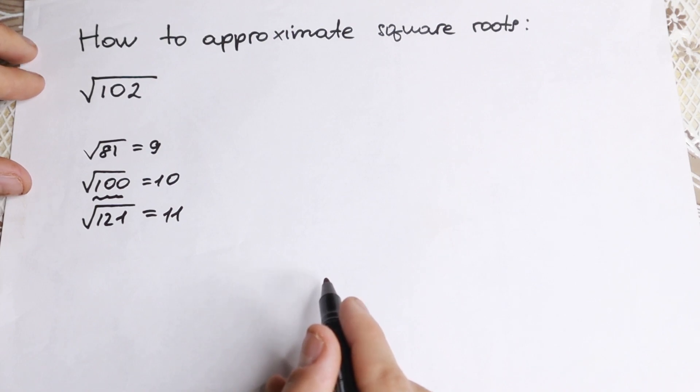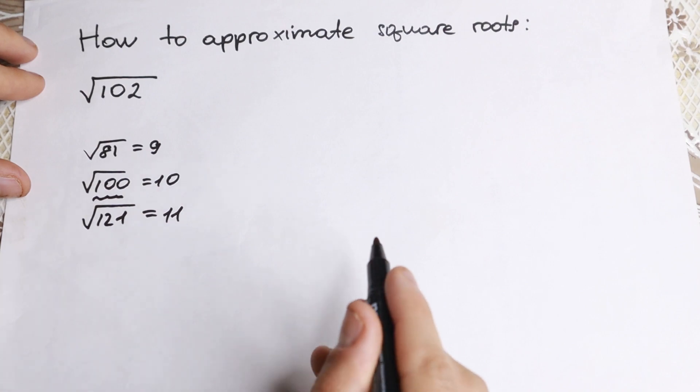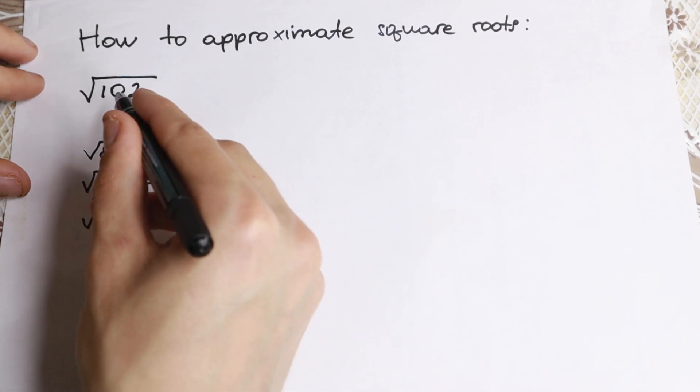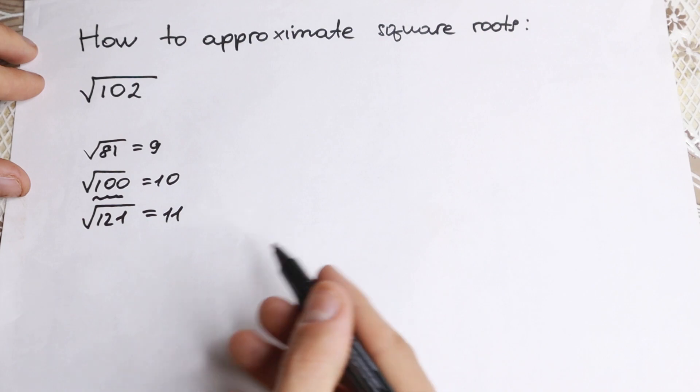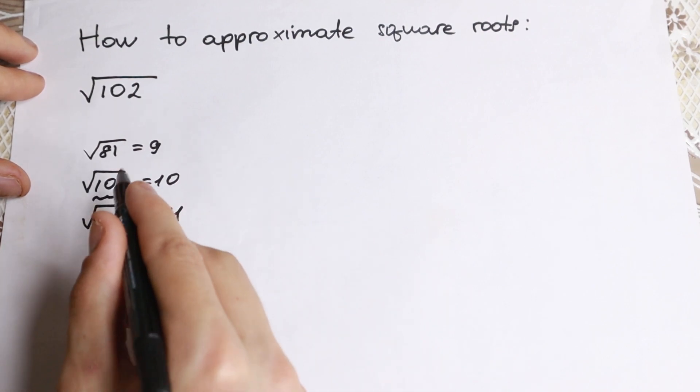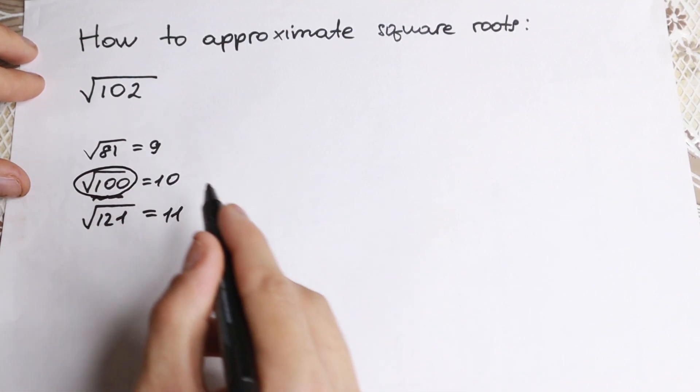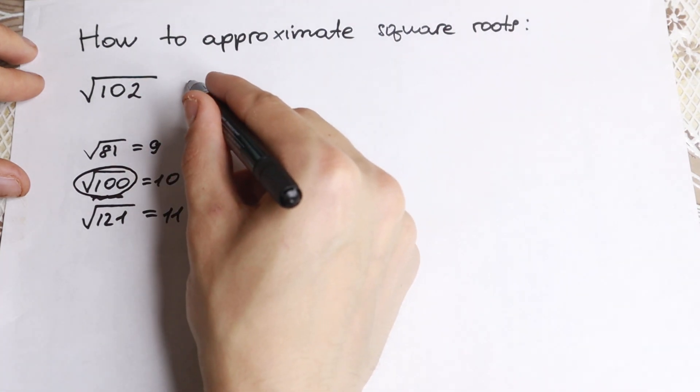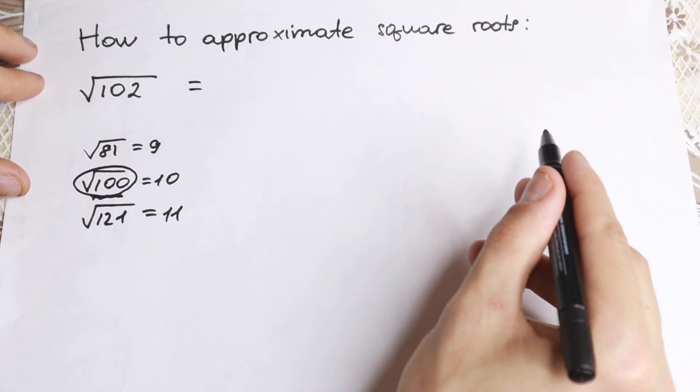Okay, the first step. We need to take the square root of the biggest number that you can take. 102... 101... 120... we can take 100. We can take this square root of 100. So we take this square root of 100.